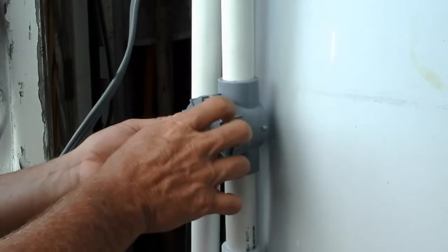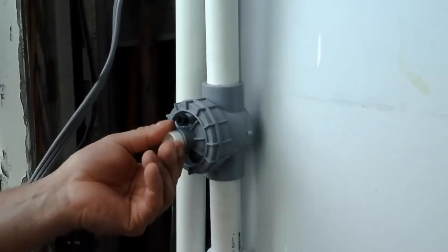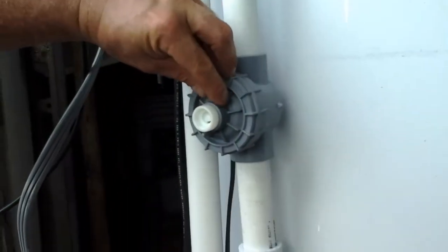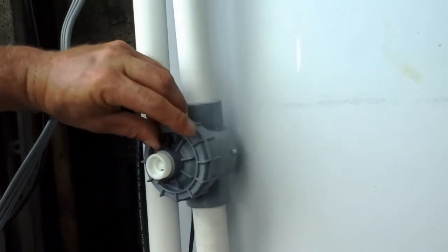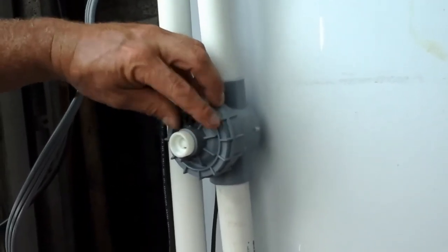Then screw it back on completely tight. This also has an adjustment screw here that you can loosen—water will spray out and that'll manually fill. So this one has three different ways to manually fill.